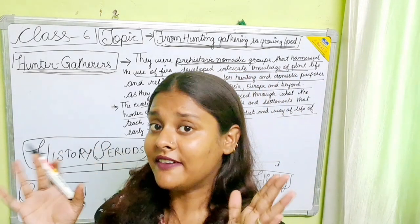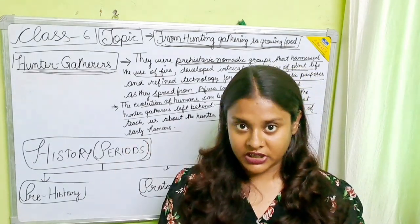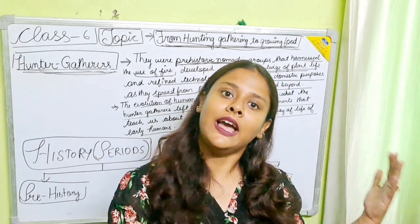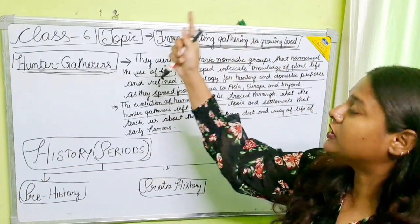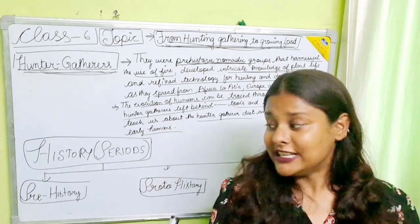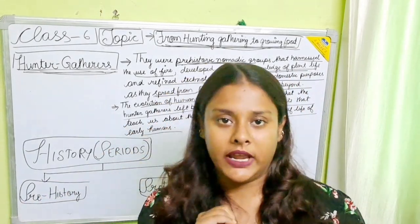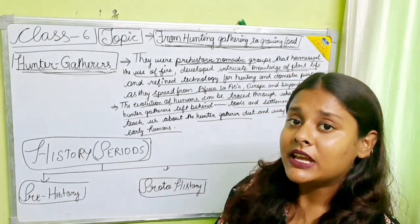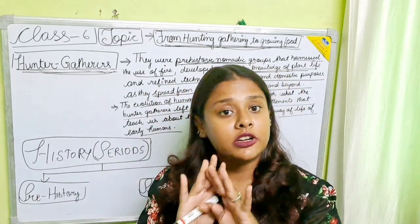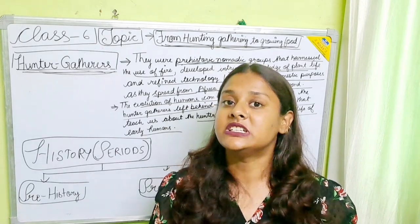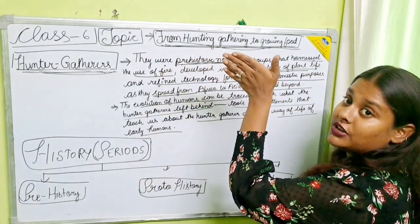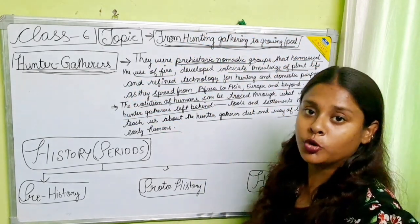Let's have a brief recap: history is divided into three periods — pre-history, proto-history, and history. This whole chapter revolves around pre-history, as the hunting gathering society existed in a pre-historic age, which belongs to the Stone Age. Pre-history is a period where no written records are found; only archaeological evidences can provide knowledge about the hunting and gathering society and how it evolved into a food production society.